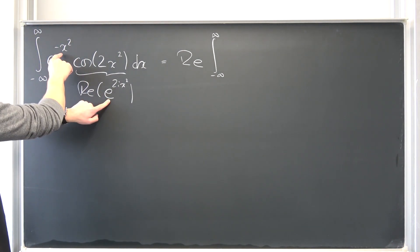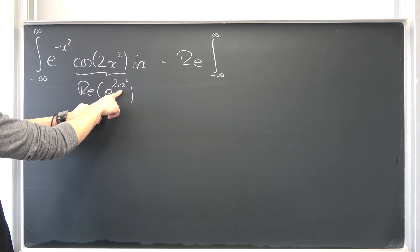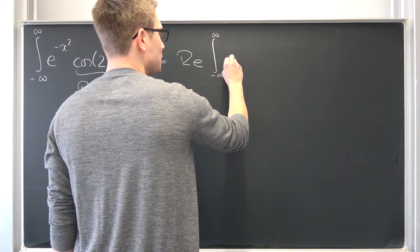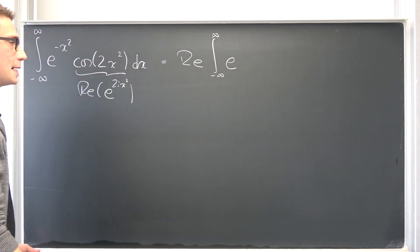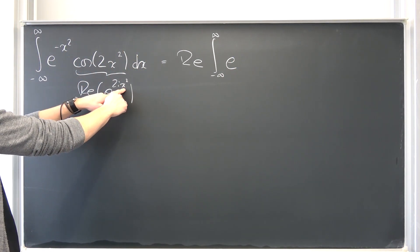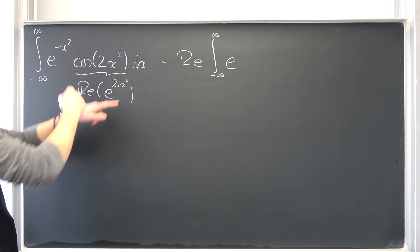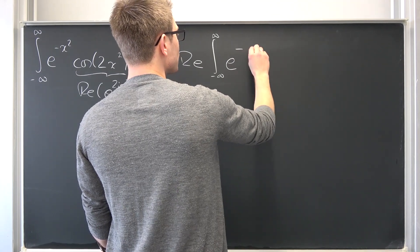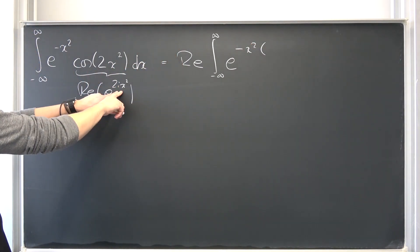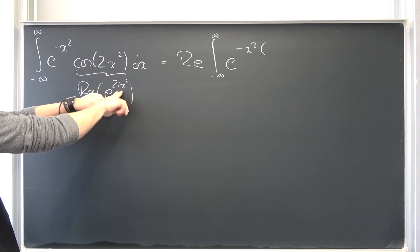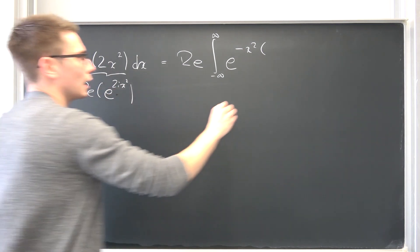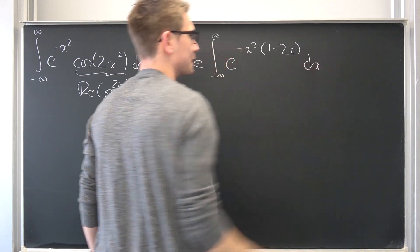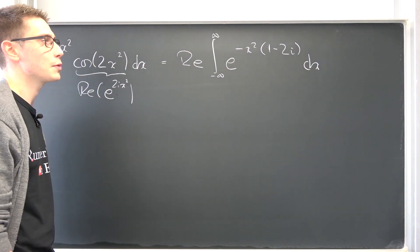Now we have e to the negative x squared times e to the 2i x squared. We can use the functional equation of the exponential function to give this thing a common base, namely e. And also we can factor out the negative x squared — we are going to get negative x squared times 1 minus 2i. Take a piece of paper, try it out for yourself. It's not hard.